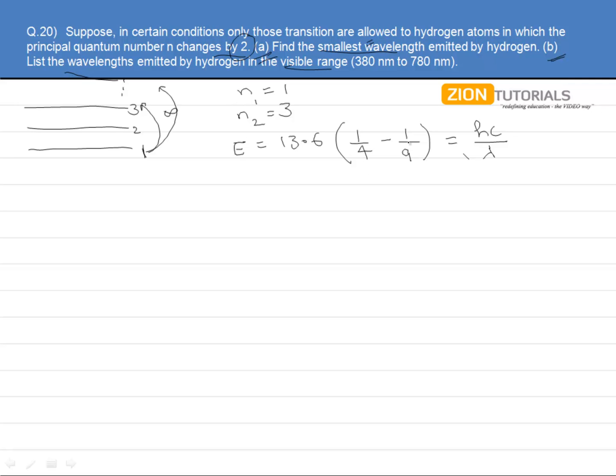Because 1 by 4 minus 1 by 9 is automatically going to be positive. But if it would have been 1 by 9 minus 1 by 4, then it would have been negative, the same magnitude with a negative sign. So it doesn't matter. You just have to make it positive and then equate it with hc by lambda because lambda needs to be positive.